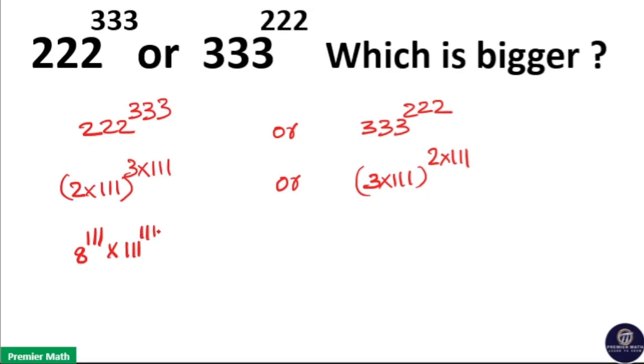This can be written as 111 plus 222 and here 3 cube is 9 and remaining power of 3 is 111. So write it. Again the remaining base is 111 and power of 111 is 2 into 111, that is 222.